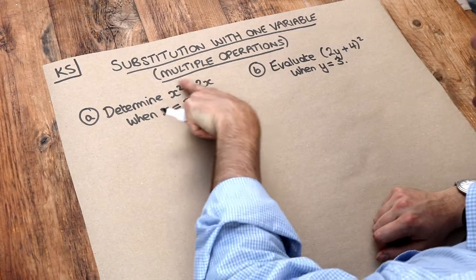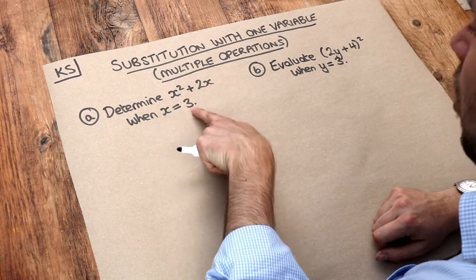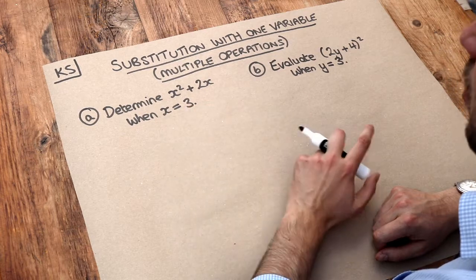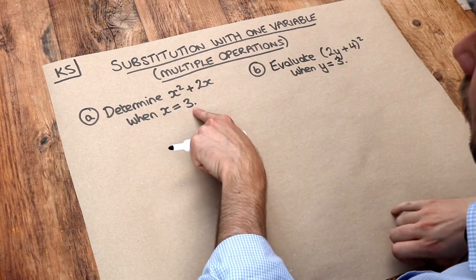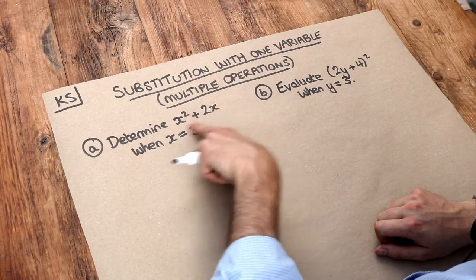We've got some expression and we need to simply substitute each occurrence of our variable or letter with whatever the value of that variable is. So here x is worth 3, so we need to replace each of those x's in that expression with 3.